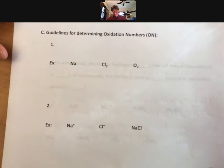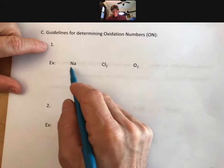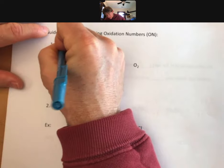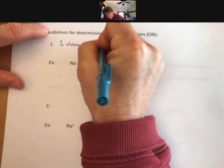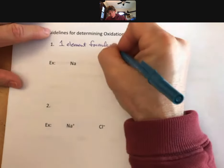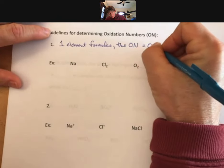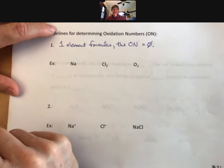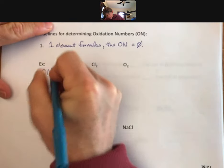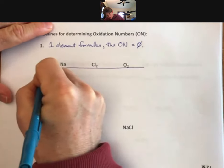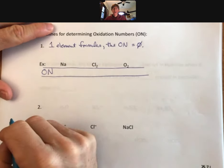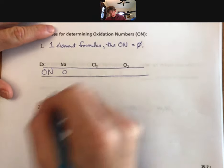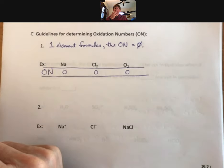The first rule for determining oxidation numbers is that any one-element formula has an oxidation number of zero. For one-element formulas, the oxidation number is zero — that's a zero with a slash through it, not the letter O. My formalism places oxidation numbers directly under each element on the line below, so sodium by itself is zero, chlorine is zero, oxygen is zero.